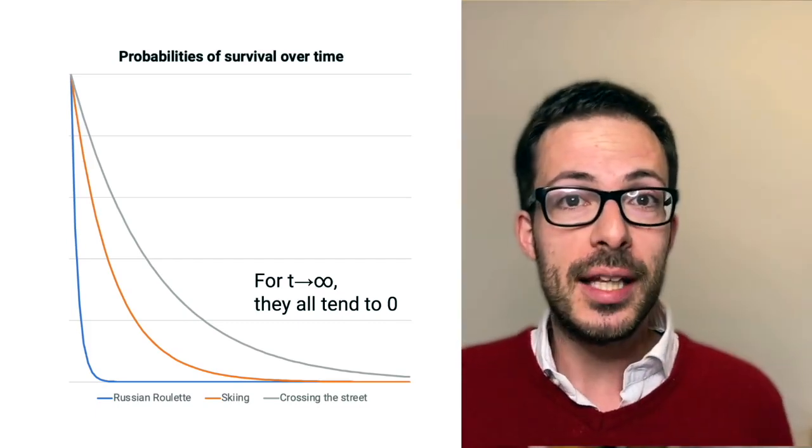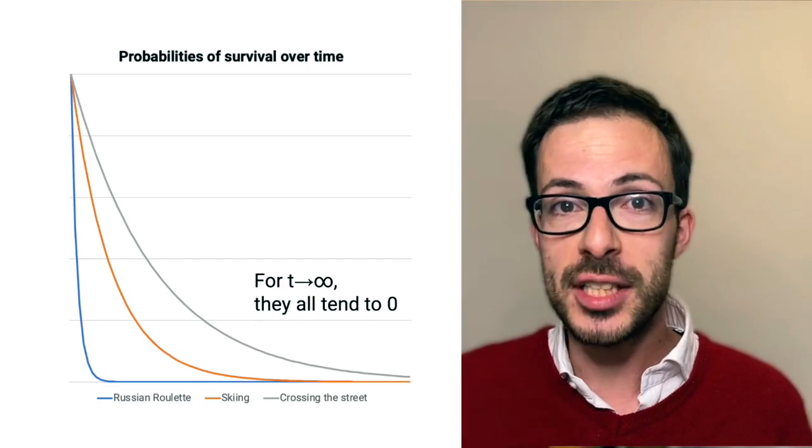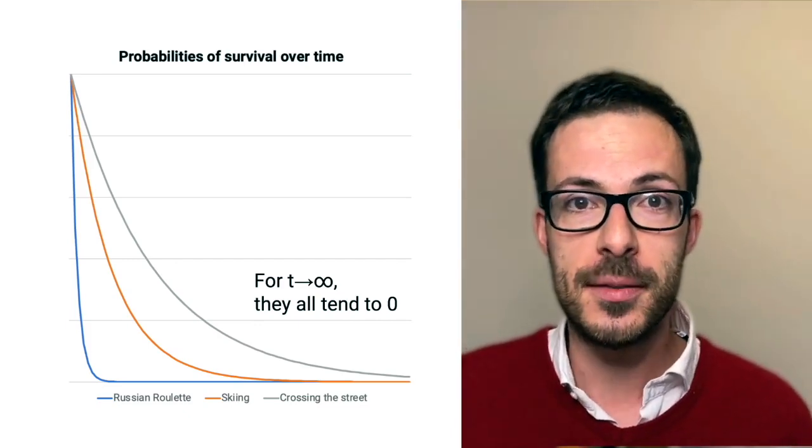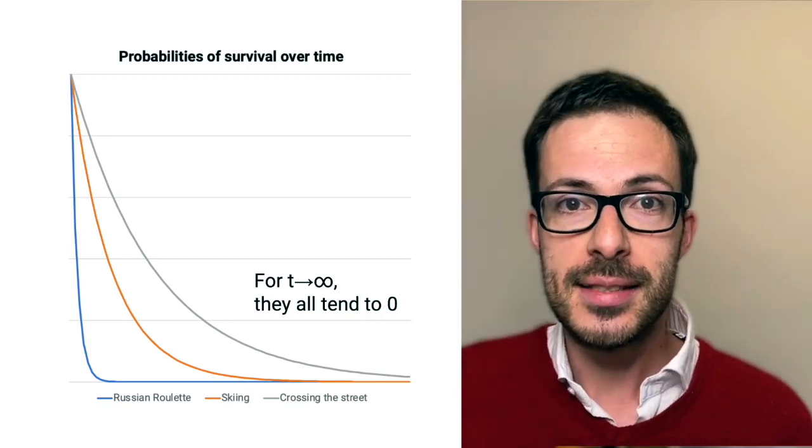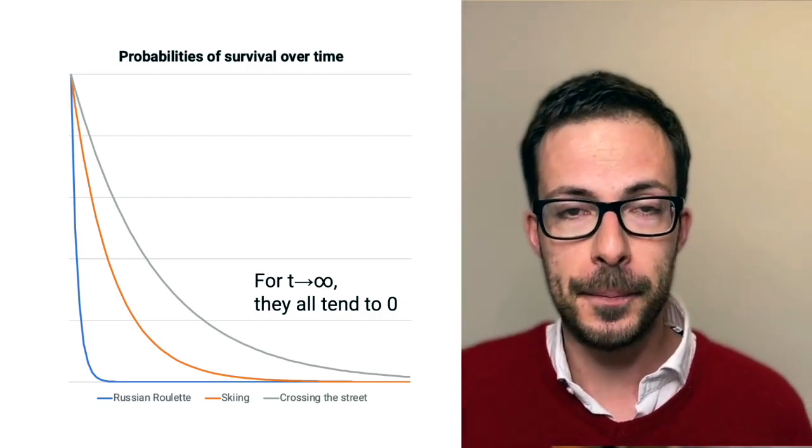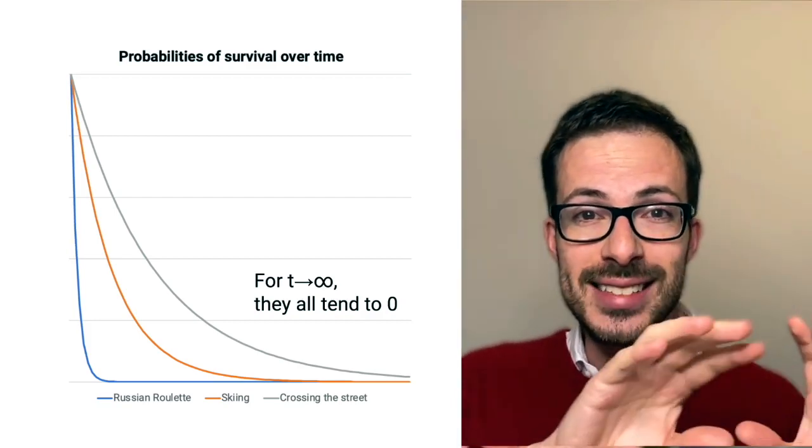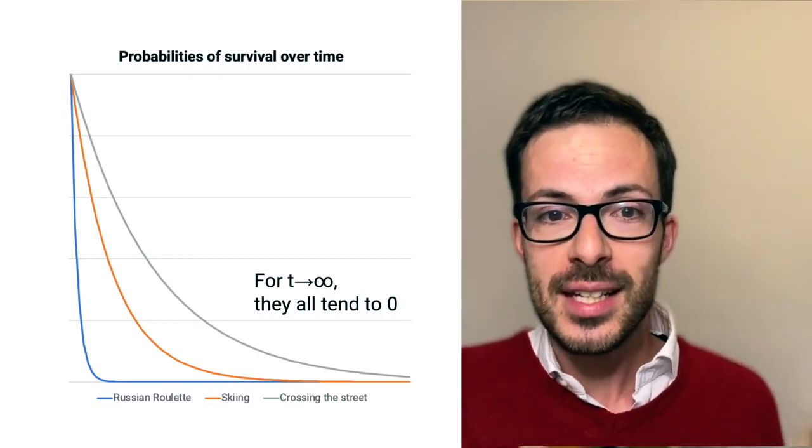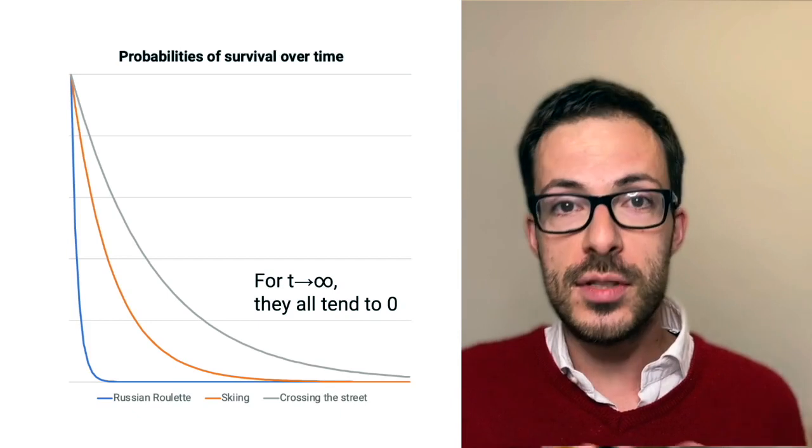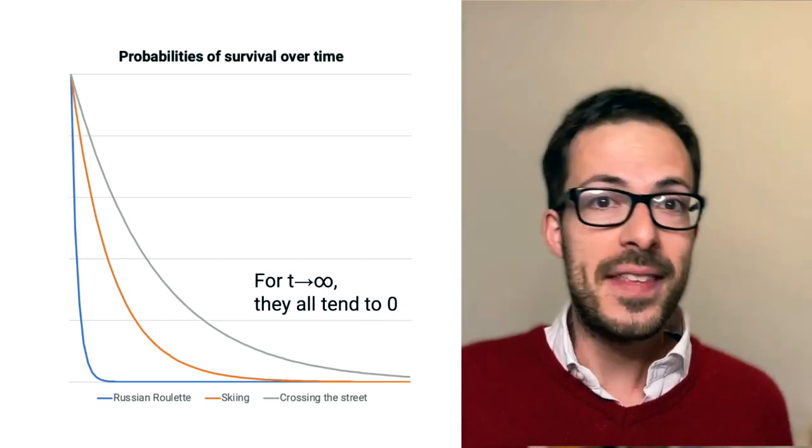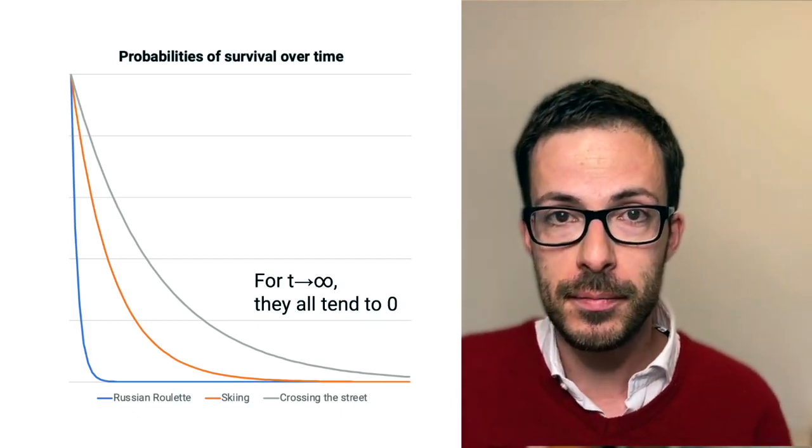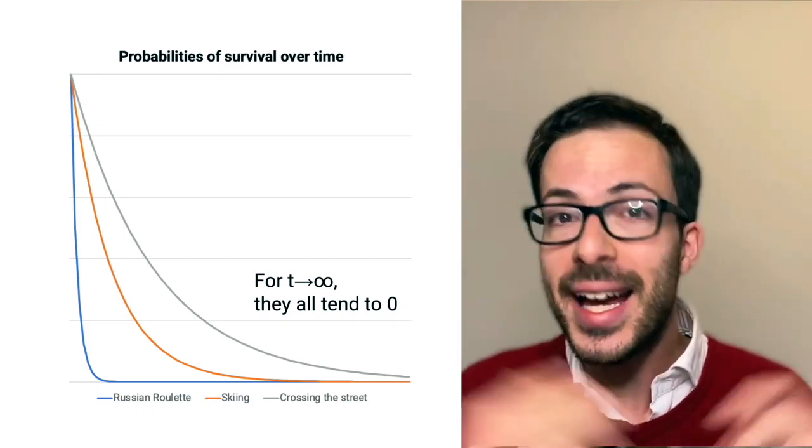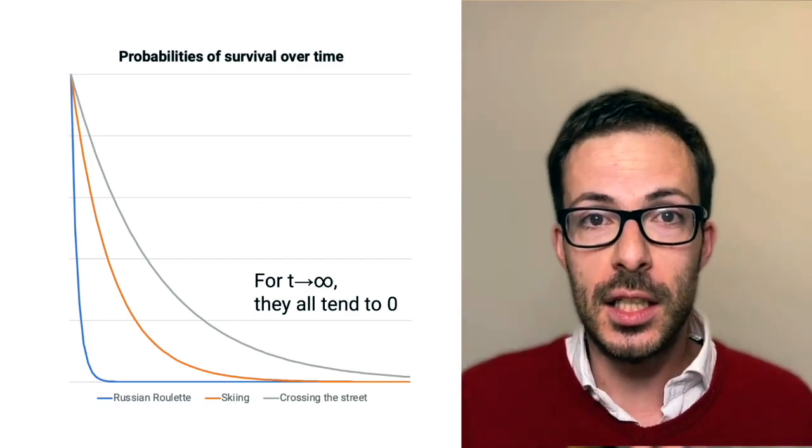Here, I plotted, somehow in an exaggerated way, the probabilities of survival over time of three activities: Russian roulette, skiing, and crossing the street. And what we see is that on the right side of the chart, which is for infinite time frames, they all tend to zero, to the same outcome. And therefore, they're all non-ergodic activities. And in general, over infinite time frames, almost any activity in the world is non-ergodic.